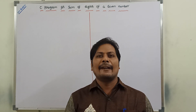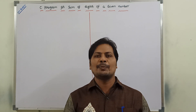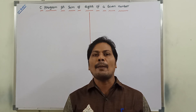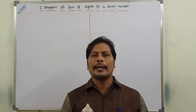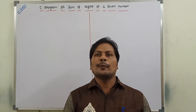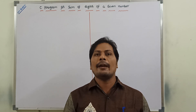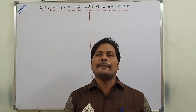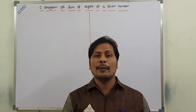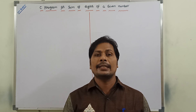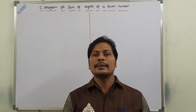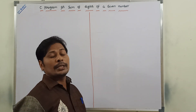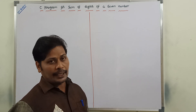Hi friends, welcome to our YouTube channel. Today we have to discuss about C program for sum of digits of a given number. In the previous video, we discussed about C program for printing the reverse of a given number. If anybody wants, please refer that video in my YouTube channel for better understanding. Now, we can go for C program for finding out the sum of digits of a given number.